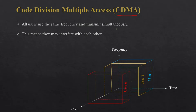In FDMA we have seen that each mobile user is using a separate frequency to communicate with the base station, and in TDMA each user is using a different time slot to communicate with the base station. But here in CDMA, all the users are going to use the same frequency and they are also going to transmit simultaneously, that means at the same time slot.